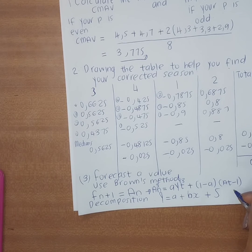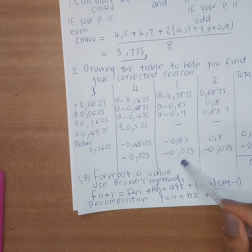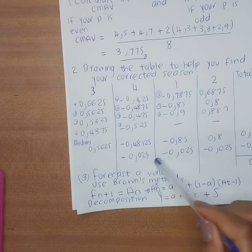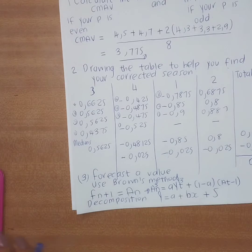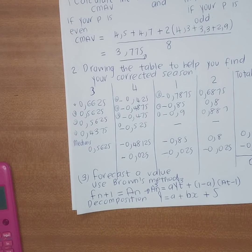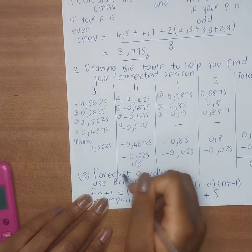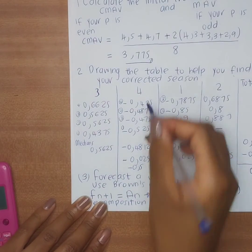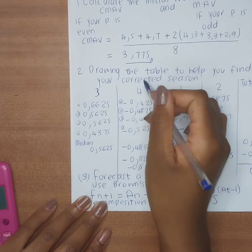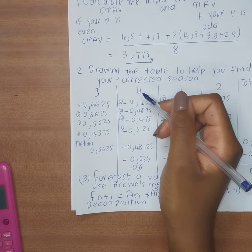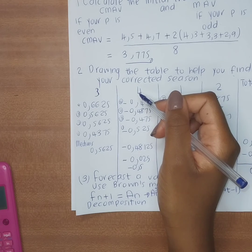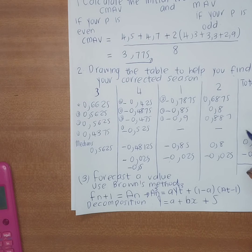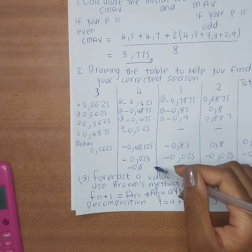An important exam tip: the seasonal component for each quarter is always the same regardless of the time period. If you're forecasting for Q4, the seasonal component is the same for every Q4 — whether it falls at time period 4, 8, or 12. It doesn't change based on time period.